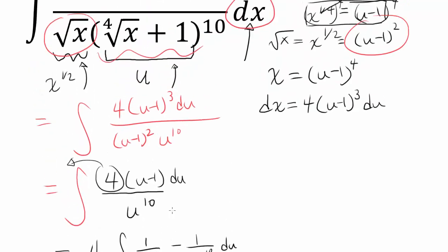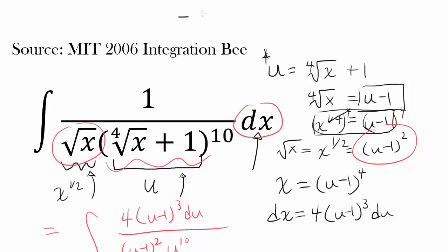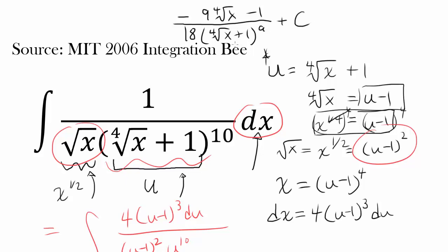So our final answer: the integral of 1 over square root of x times 4th root of x plus 1 to the 10th power is negative 9 times 4th root of x minus 1, divided by 18 times 4th root of x plus 1 to the 9th power. And you want to add the constant of integration. And we are done. Thank you.